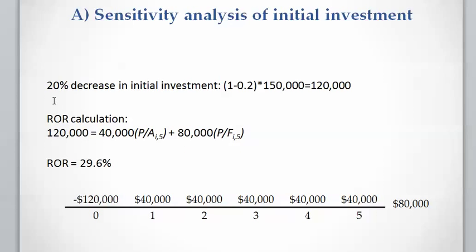Next, the effect of a 20% decrease in initial investment. If the initial investment is decreased by 20%, it becomes 1 minus 20% multiplied by $150,000. We calculate the rate of return for this new situation, and the rate of return is 29.6%.